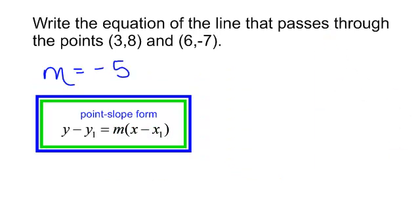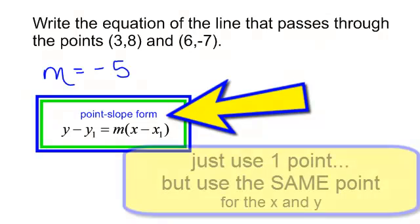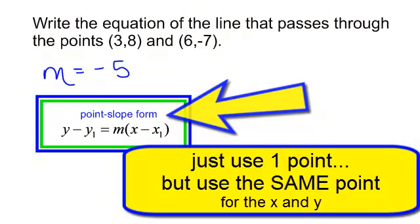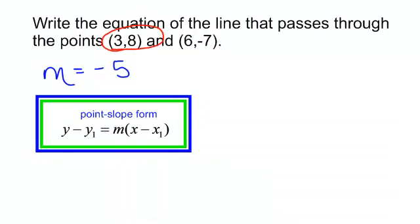We have found out that the slope was negative 5. Now I am going to write the equation of the line. I am going to use point-slope form. Does this say point point slope? No, it is just point slope. I don't need both of those points. Just pick one. I don't care which one you use. I will pick the first one, 3, 8.